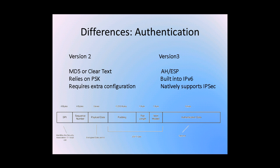To address another major difference between OSPF Version 2 and OSPF Version 3, let's take a look at authentication mechanisms. In OSPF Version 2, an MD5 hashing algorithm was used, or a clear text authentication mechanism was used which relied on a pre-shared key. This method also required extra router configuration. In OSPF Version 3, configuration is cut down by OSPF's ability to tap into the native support for IPSec within the IPv6 protocol stack. The IPv6 protocol stack uses authentication headers to provide an authentication mechanism between two IPv6 devices.